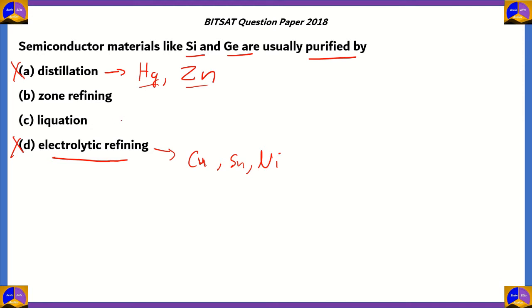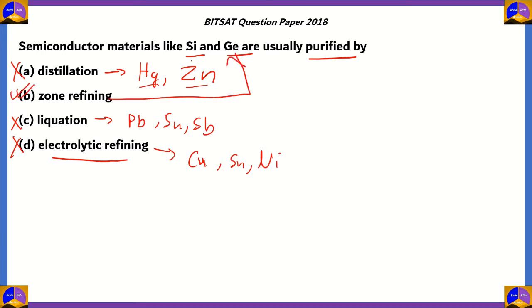Liquation is applicable for materials such as lead, tin, and antimony, so option C is also incorrect. The right answer is option B — zone refining — which is used to purify semiconductor materials such as silicon and germanium.